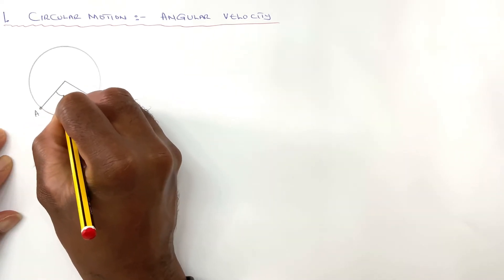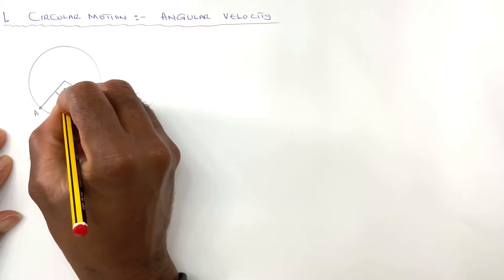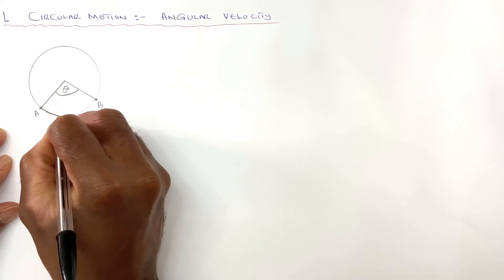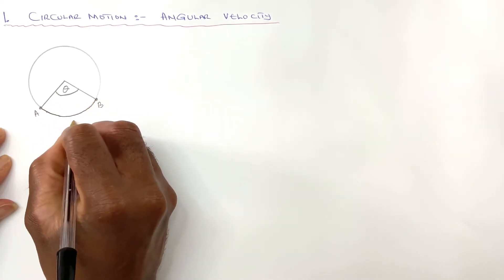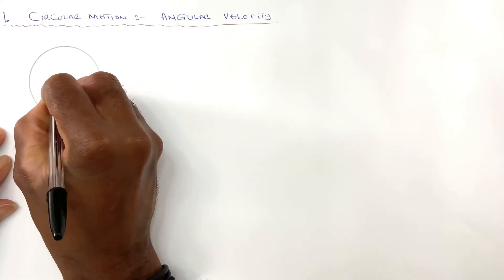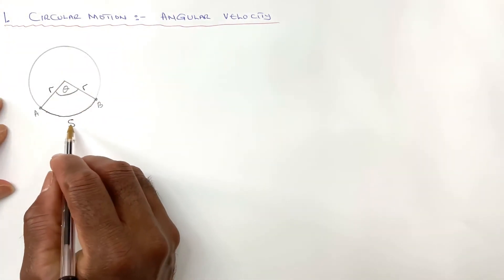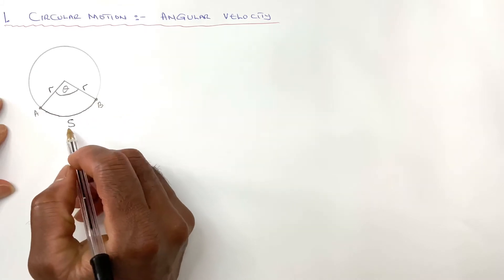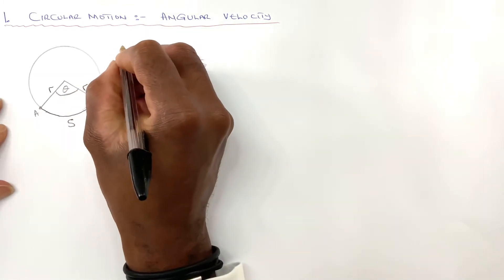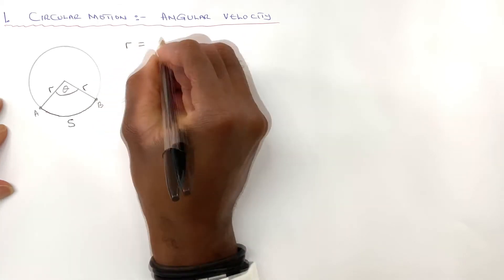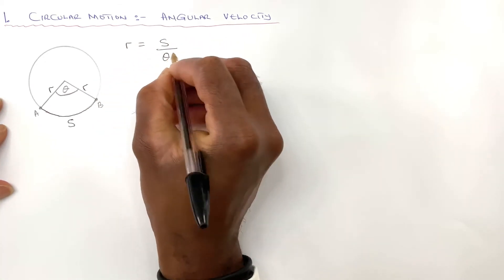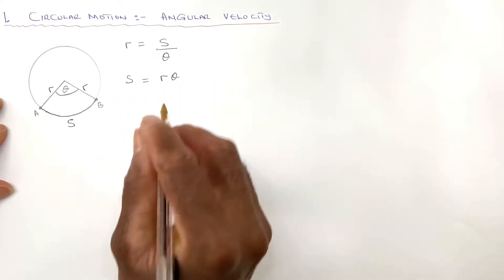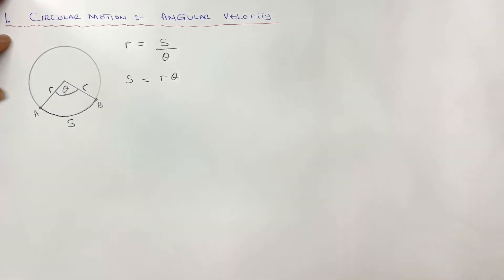It will subtend an angle theta and an arc length from A to B of S, with a radius R. And the object has a relationship between the arc length A to B and radius and theta, where we say that R is S over theta and therefore S equals R theta.